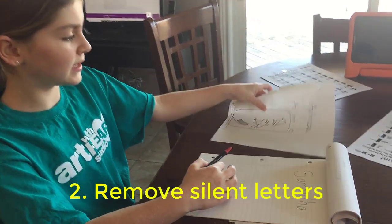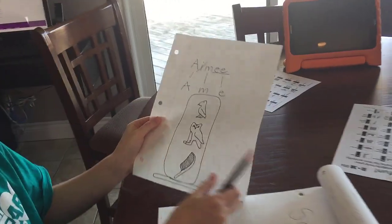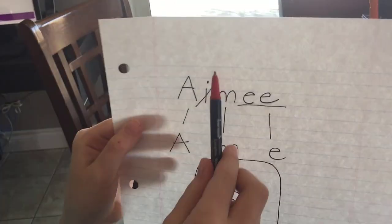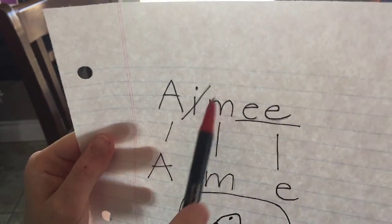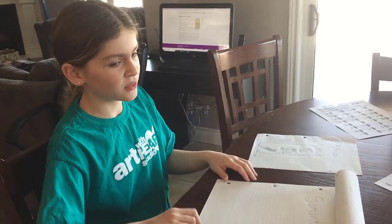In my name, I don't have any silent borders, but for example, Amy, you wouldn't pronounce the I, so you'd cross it out. Step 3.